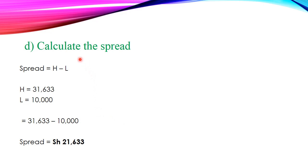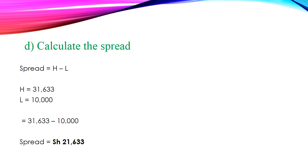Part D: calculate the spread. The spread is given by the upper limit minus the lower limit. Our upper limit is 31,633 shillings and our lower limit is 10,000 shillings. Subtracting gives a spread of 21,633 shillings.